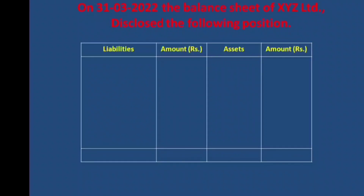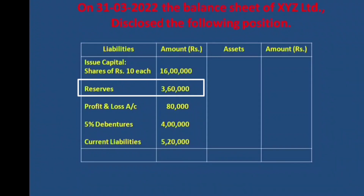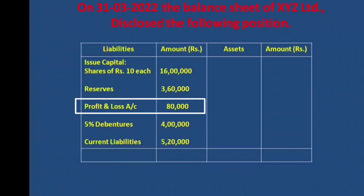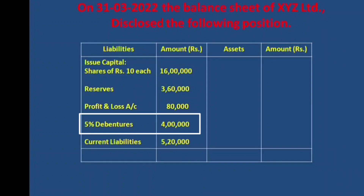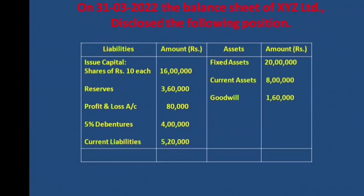The balance sheet of XYZ Limited disclosed the following position. Liabilities: issued capital — shares of 10 rupees each, 16 lakhs; reserves, 3,60,000; profit and loss account, 80,000; 5% debentures, 4 lakhs; current liabilities, 5,20,000.